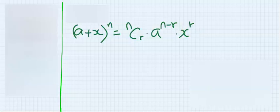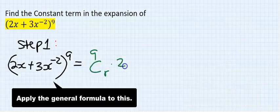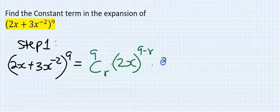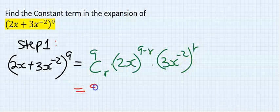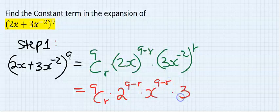This is the general formula. It's going to be 9 combination r, 2x to the power of 9 minus r, 3x minus 2 to the power of r, 9 combination r, 2 to the power of 9 minus r, x to the power of 9 minus r, 3 to the power of r, and x to the power of minus r.